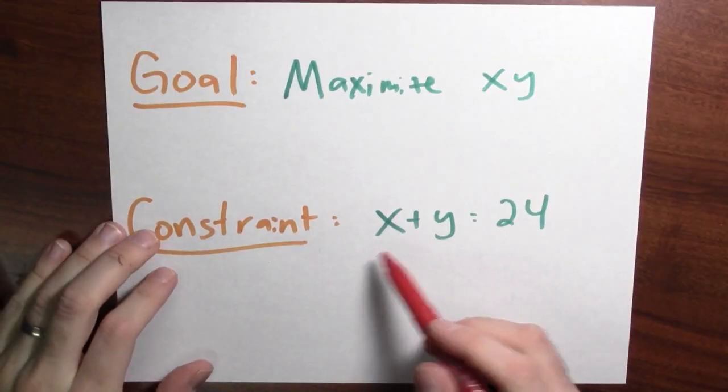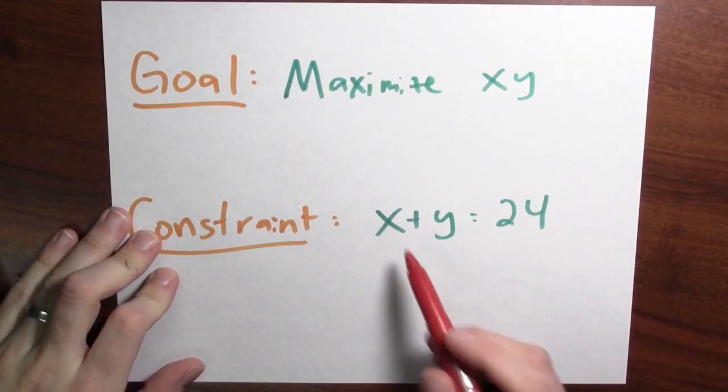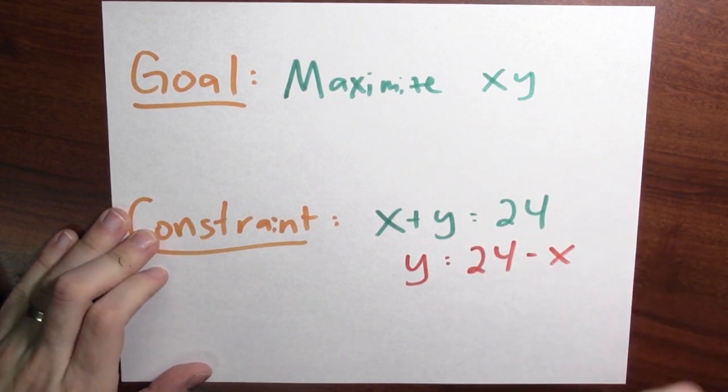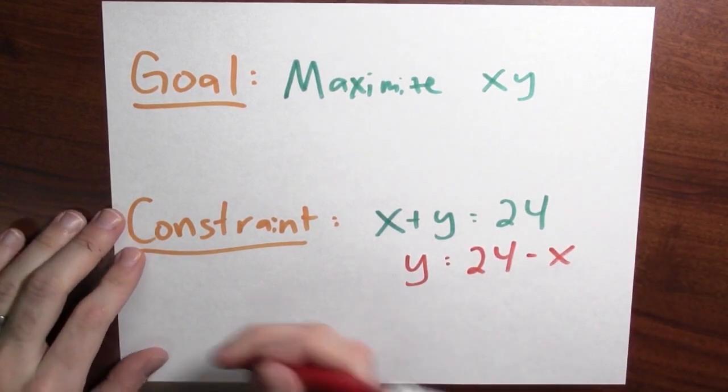x, y isn't a function of a single variable. I need to rewrite it so it's a function of x alone. Now, since x plus y is 24, I could rewrite this as y equals 24 minus x.